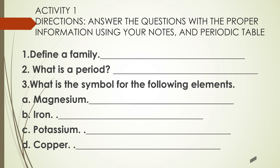Activity number one direction: answer the questions with the proper information using your notes and periodic table. You need to have your periodic table ready, class. Number one: you need to define what is a family present in the periodic table. Number two: what is a period?